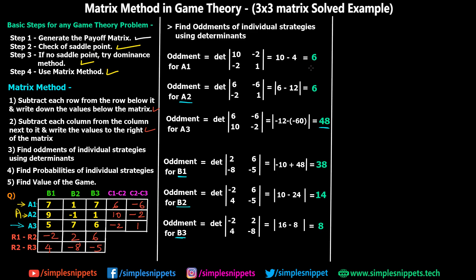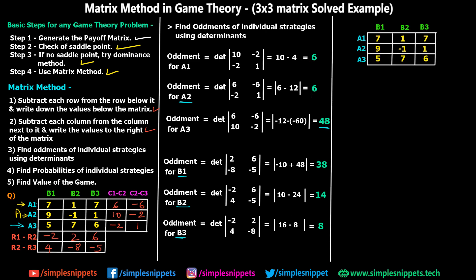Now we redraw the matrix and write the individual oddments beside each strategy: A1 = 6, A2 = 6, A3 = 48, B1 = 38, B2 = 14, B3 = 8. If you total them, 38 + 14 + 8 = 60, and 6 + 6 + 48 = 60 as well — both totals match, which is how oddments work. We've essentially found our individual strategy probabilities.